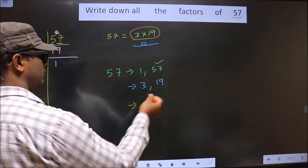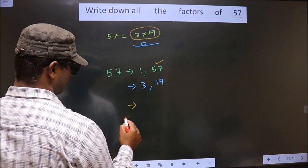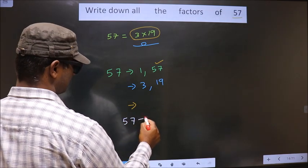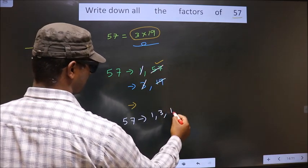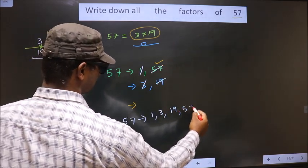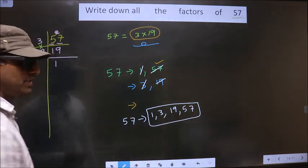Thus, these are the factors of 57. That is 1, 3, 19, and 57. These are the factors of 57.